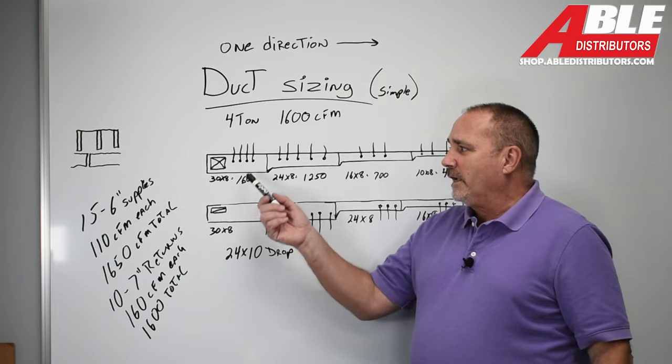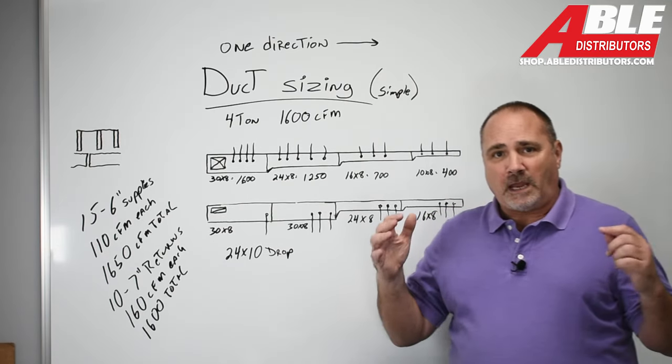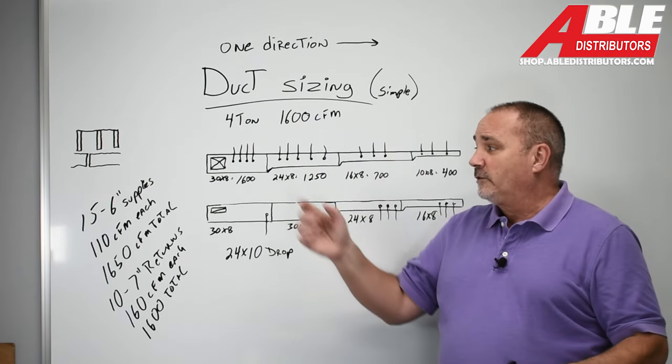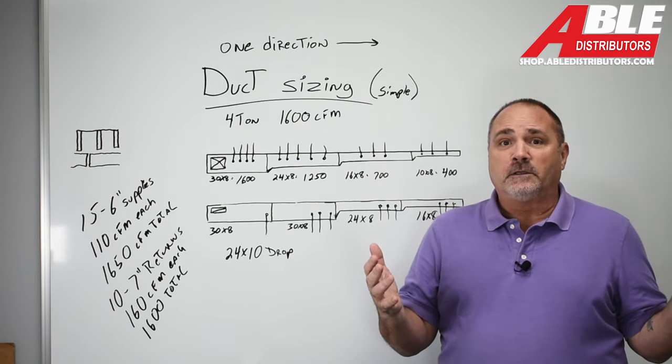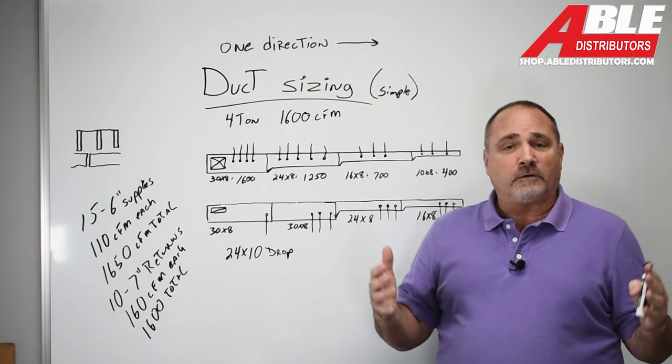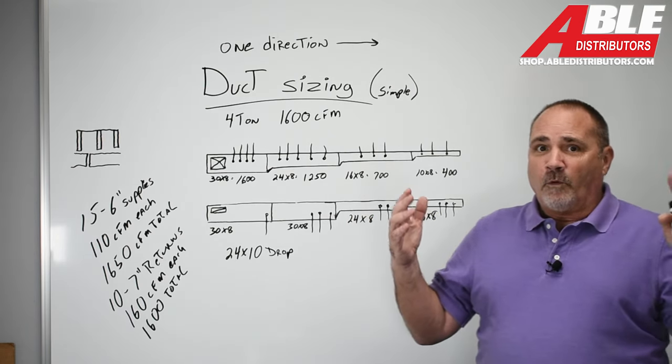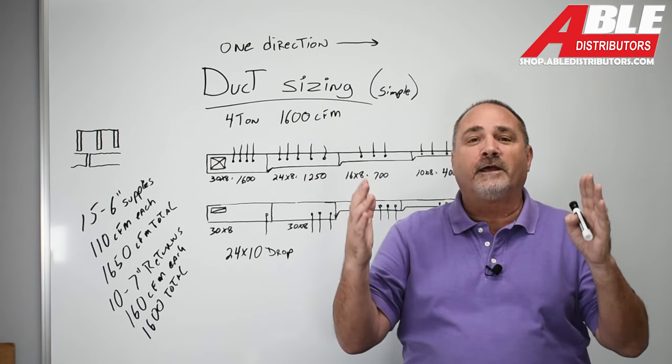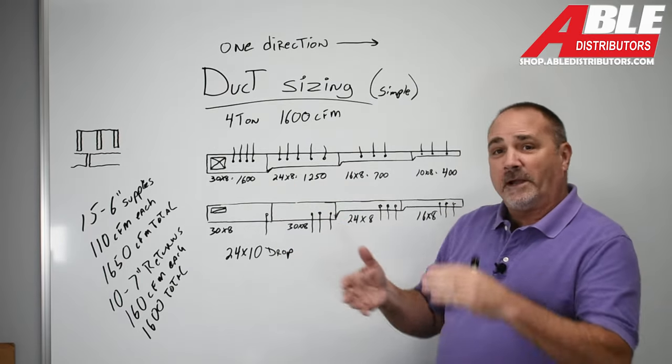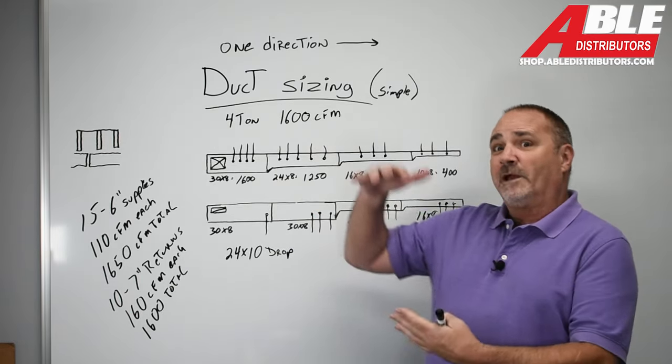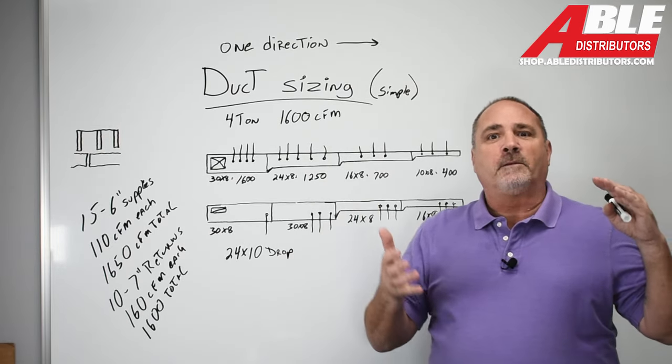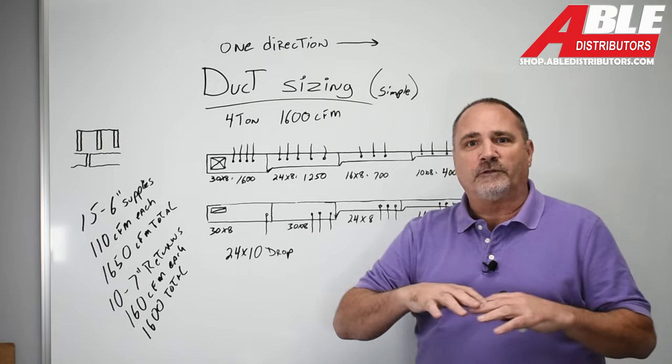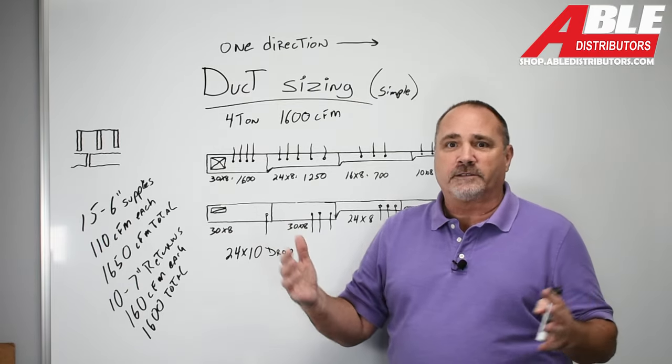I started out in 30 by 8. That first piece of duct has to be capable of the full 1,600 CFM. Anything less than 30 by 8, it's just not going to do it. You know, I run across a lot of guys when I go to jobs and I ask them, what made you choose that size duct? And they say it fit. I don't like that answer. Either go 24 by 10, go 20 by 12, go 30 by 8, do something to make sure that you have enough in your first piece to handle the entire load, the entire CFM. It's where you got to start.